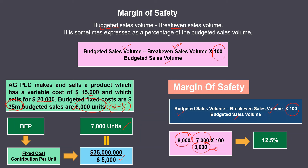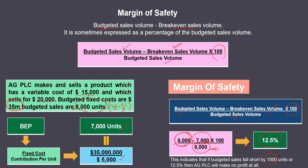What does this 12.5 percent mean? It indicates that if budgeted sales fall short by 1,000 units — the breakeven point is 7,000 and the budgeted sales volume is 8,000 — a shortfall of 1,000 units, which is 12.5 percent of 8,000, means AG PLC will make no profit at all. So if actual sales fall from 8,000 to 7,000 units, the company breaks even and earns no profit.